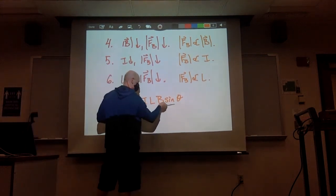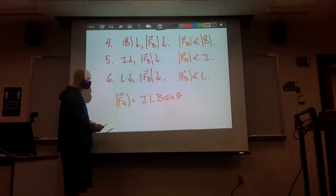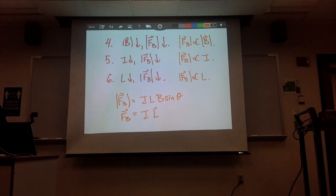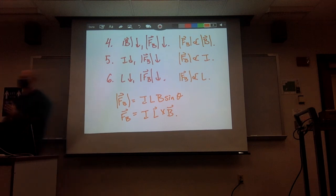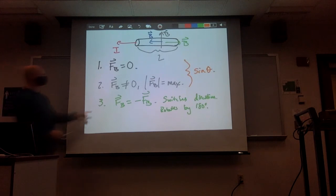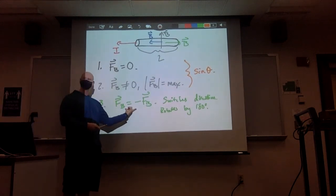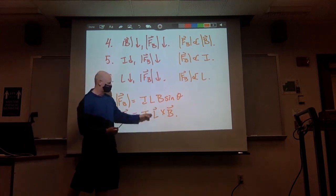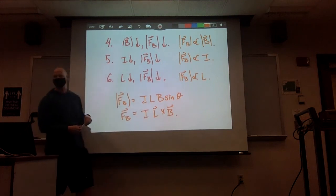Since this goes as a sine and both L and B are vectors, this must be a cross product. In vector form: F = I (L⃗ × B⃗). This is the force on a current-carrying wire in a straight conductor with a constant magnetic field. The cross-product form also explains experiment 3: changing the direction of current or field reverses the sign of the cross product, flipping the force by 180 degrees.